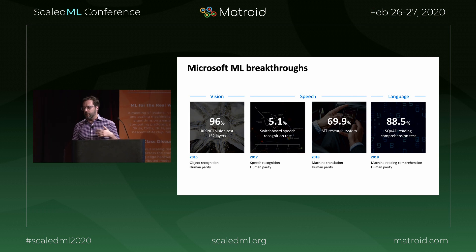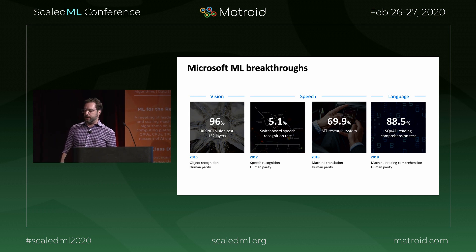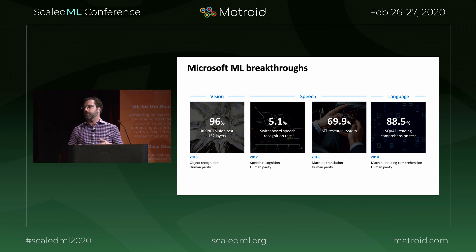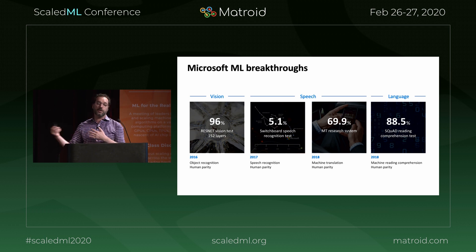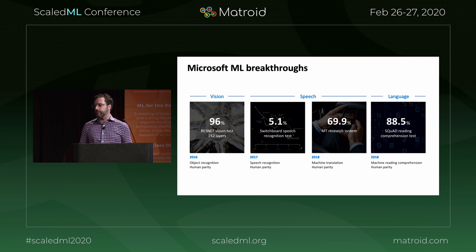In 2016, we contributed papers around object recognition to reach human parity. 2017, speech recognition. 2018, machine translation and machine reading comprehension. We believe very strongly in the ML community — this would not be possible if we hadn't built on the shoulders of the giants who came before us, and we gave it all back so the next generation can leverage up the machine learning community.